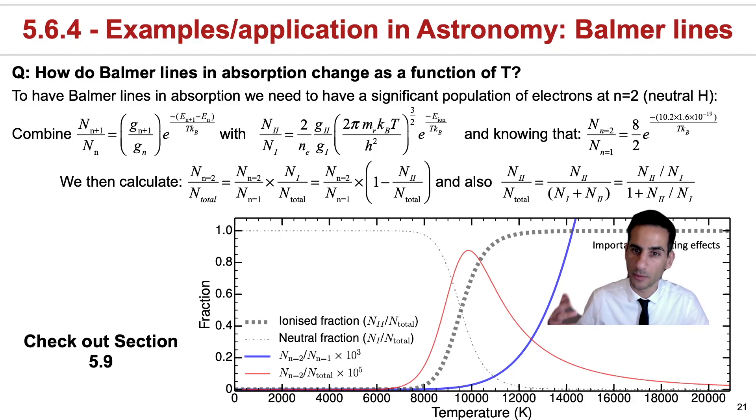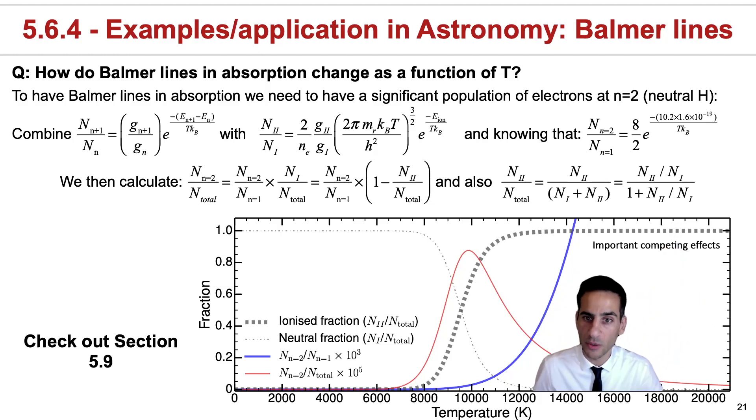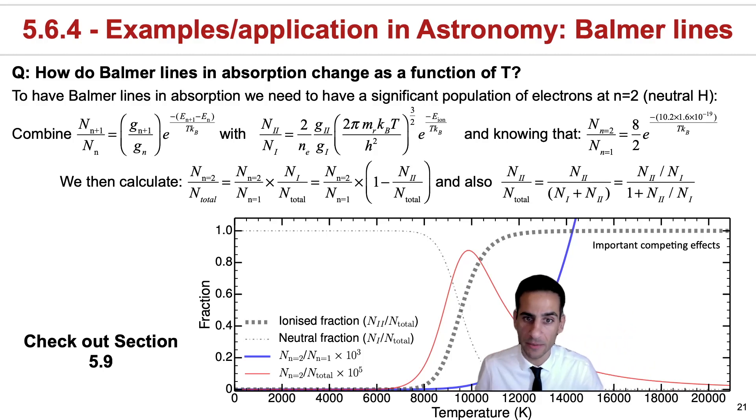Therefore, if you only use the Boltzmann equation and you forget about the fact that atoms can get ionized, you'd expect Balmer lines to keep going up for temperature. Now what happens is that to get strong Balmer lines, you don't just need a high ratio of atoms at n equals 2, you need them to be neutral. And this is where the Saha equation really comes about.